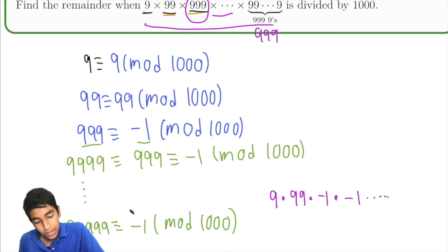Because it goes all the way until 999 nines, and two of them are 9 and 99, so there's going to be a total of 997 negative 1s. So what is the value of this mod 1,000?